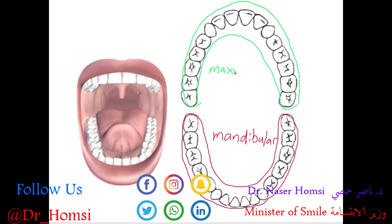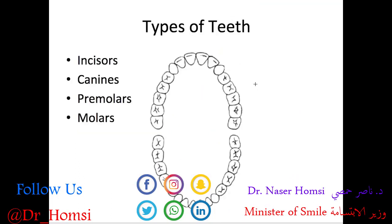For types of teeth, they're oriented by their location, shape, and function. The incisors refer to the front four teeth, and this is the same for both the maxillary arch and the mandibular arch. The incisors are used for incising or slicing food, they're important for aesthetics because they're in the front, and they're important for phonetics — for example, when pronouncing F and V sounds your incisors contact your lower lip.